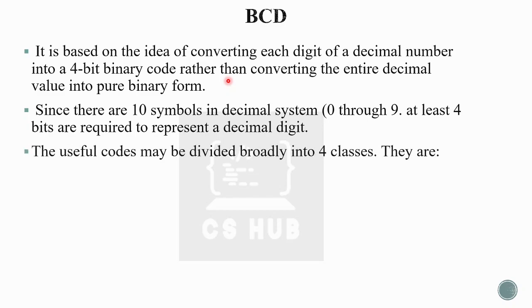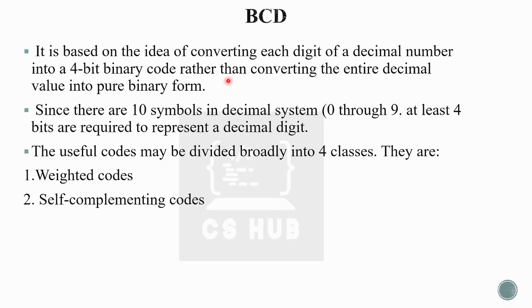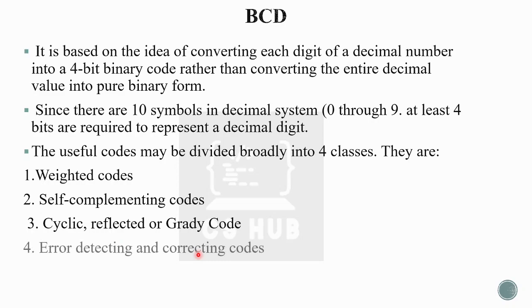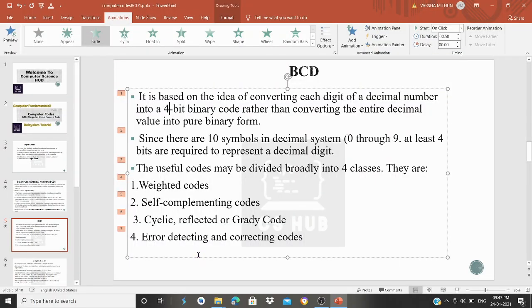There are different types of useful codes. These are: weighted codes, self-complementing codes, cyclic or reflected or gray codes, and error detecting and correcting codes.